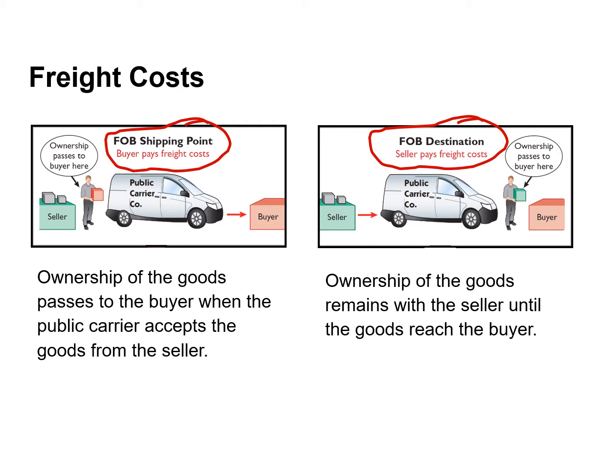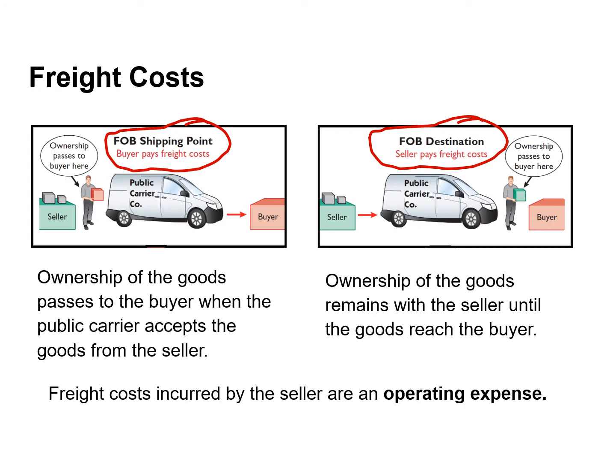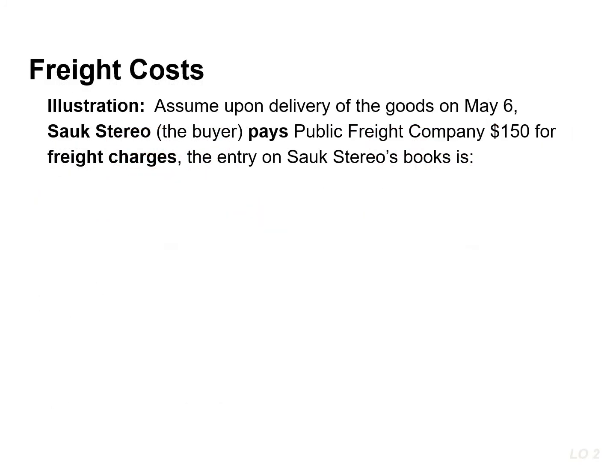If the sales invoice indicates FOB shipping point, then the buyer pays the freight cost. These costs are considered part of the cost of purchasing inventory. Freight costs incurred by the seller are an operating expense. When the buyer pays the transportation cost, these costs are considered part of the cost of purchasing inventory, because inventory costs should include all costs to acquire the inventory, including freight necessary to deliver the goods to the buyer. The company recognizes these costs as cost of goods sold when the inventory is sold.